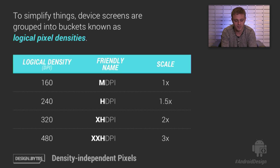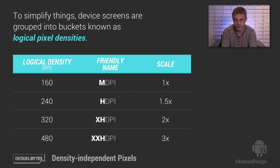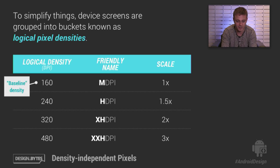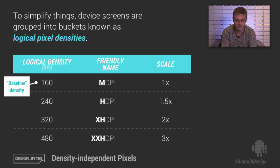Here on screen you see the most important logical densities that you as a designer would have to work with. So for example, if a real device had a 165 DPI screen, that would be mapped down to 160 DPI, and you'd simply treat it as a 160 DPI screen. And 160 DPI is a special value — the baseline density on Android — where everything, and specifically the density-independent pixel units, is based on this baseline density.